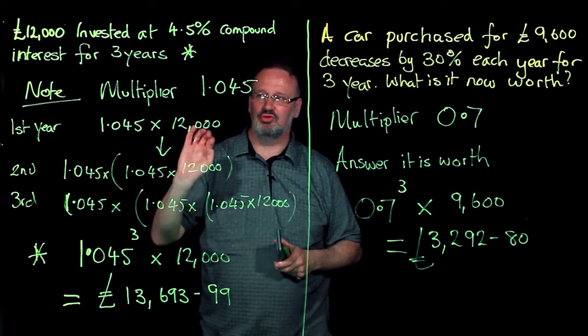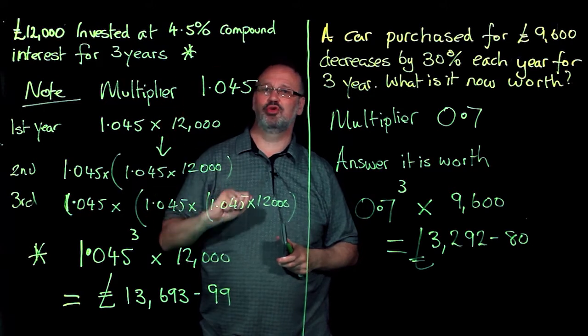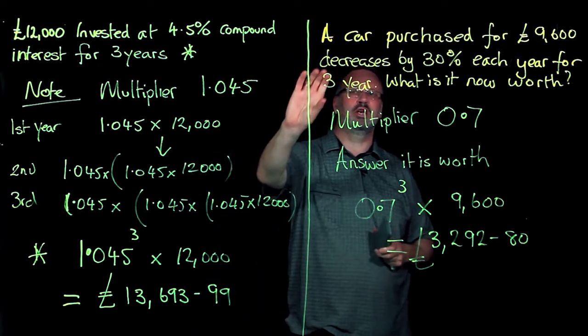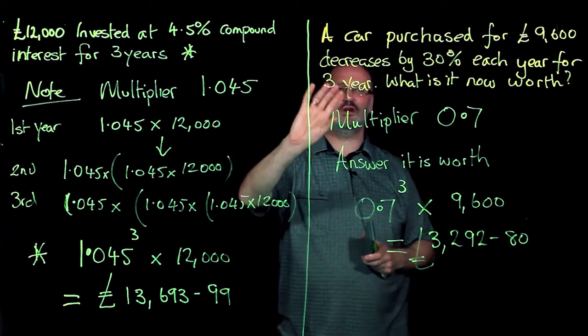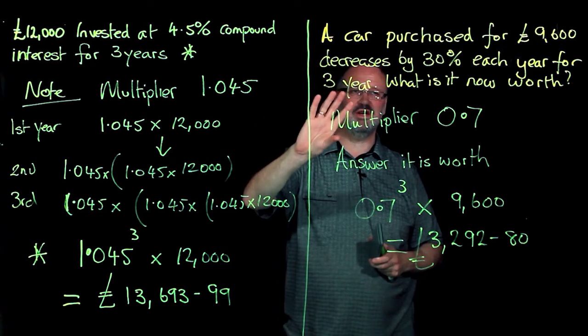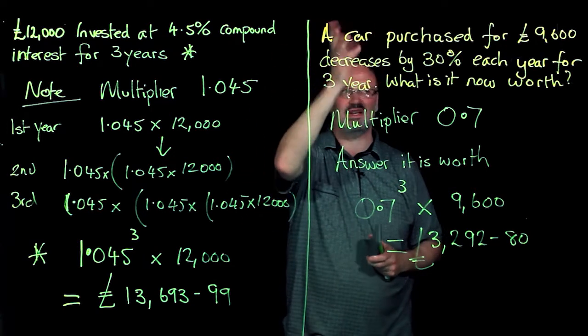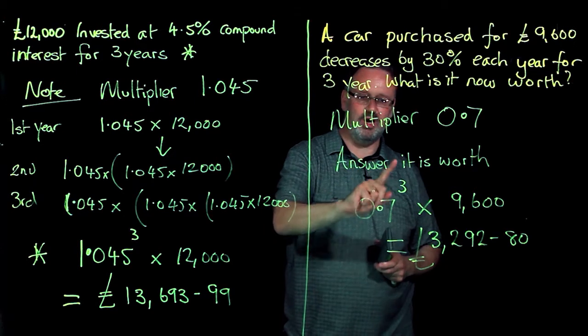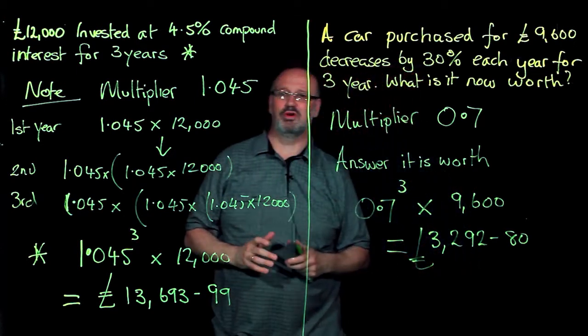You don't do 3 times 4.5%. We need the multiplier and its power. If a car goes down by 30% each year for three years, three times 30, 90, take off 9. That's not the way to do it. We need to find the multiplier to its power times the sum we started with.